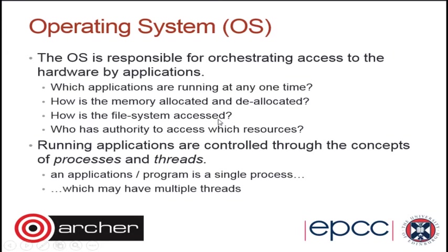Fundamentally the operating system has two ideas of things that can run on it: a process and a thread. A process is a running application — your web browser is a process, your computational simulation is a process. A thread is a worker which can be created by that application to do some extra work for it. One application runs as a process, and that process can generate multiple threads.